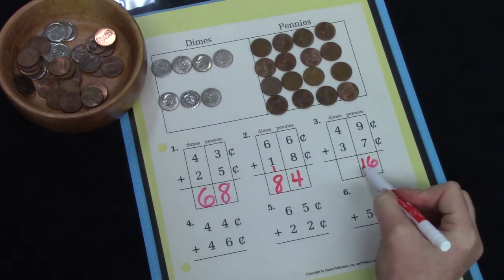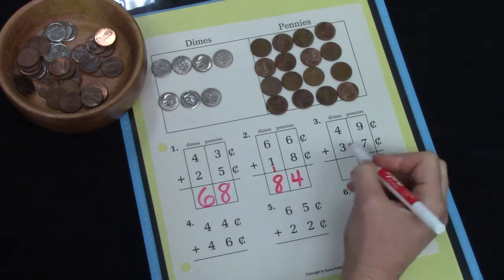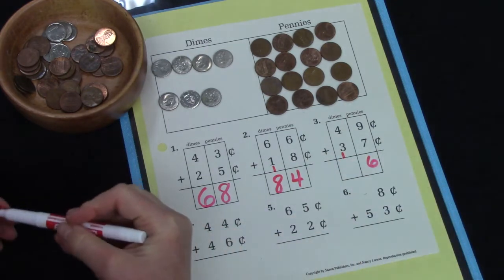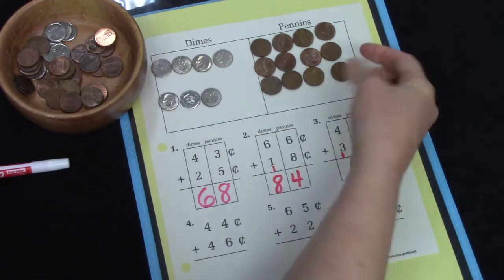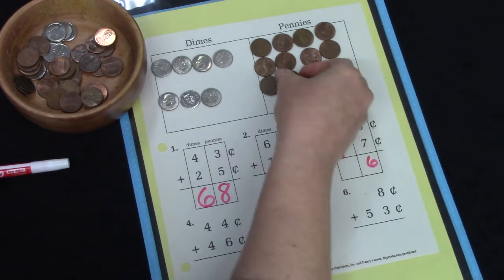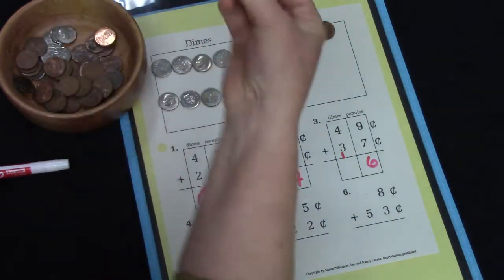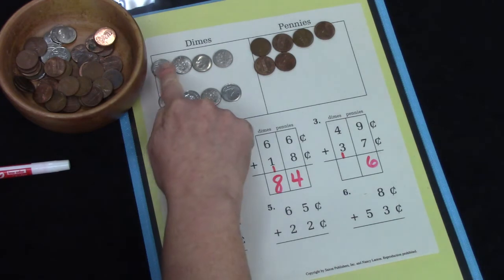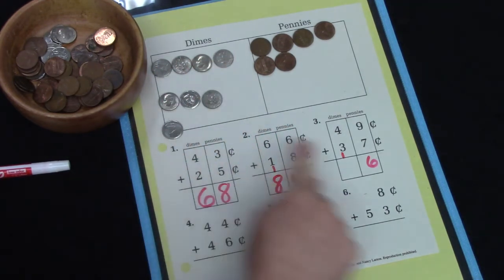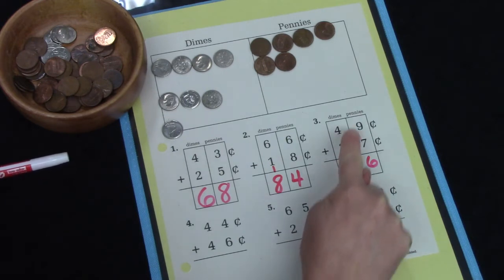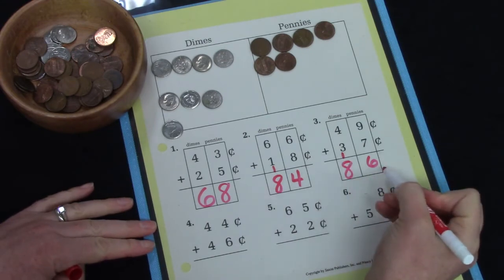We are going to have to trade a group of 10 for a dime. So I'm going to take off the 10, put it over here. Let's take off our 10: 1, 2, 3, 4, 5, 6, 7, 8, 9, 10. And I'm going to trade it for another dime. So we have 4 plus 3 plus our 1 more. 4 plus 3 is 7 plus 1 more is 8. 86.